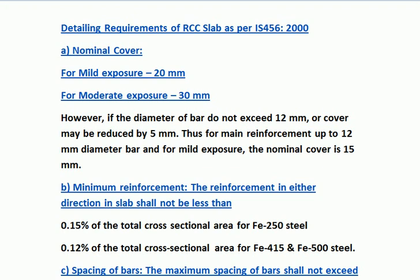Moving to minimum reinforcement: the reinforcement in either direction in slab shall not be less than 0.15% of the total cross-sectional area for Fe 250 grade of steel (mild steel), and 0.12% of the total cross-sectional area for HYSD steel — that is Fe 415 and Fe 500 steel bars.